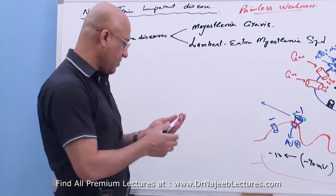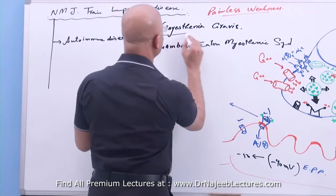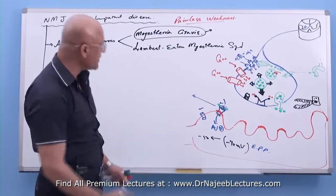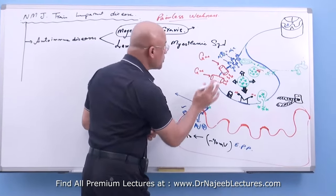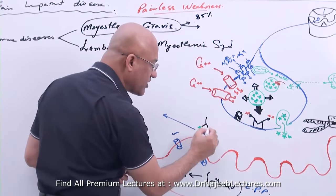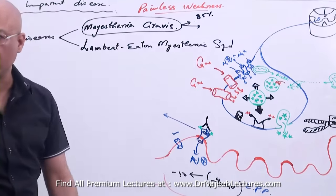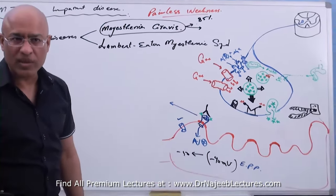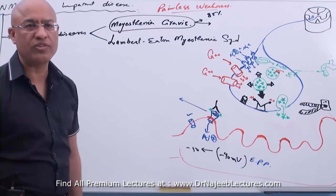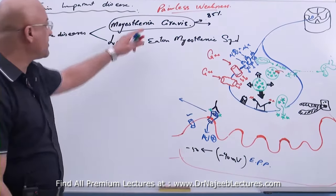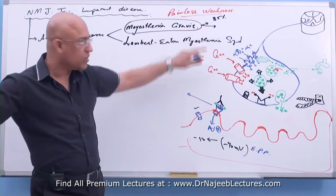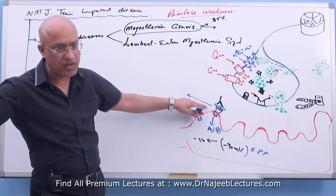In Myasthenia Gravis, this is an autoimmune disease in which autoantibodies are produced in 85% of patients against the acetylcholine receptors — specifically the nicotinic receptors at the neuromuscular junction. Because there are acetylcholine receptors in many other places, you must specify: in Myasthenia Gravis, about 85% of patients produce autoantibodies directed against nicotinic acetylcholine receptors at the neuromuscular junction.